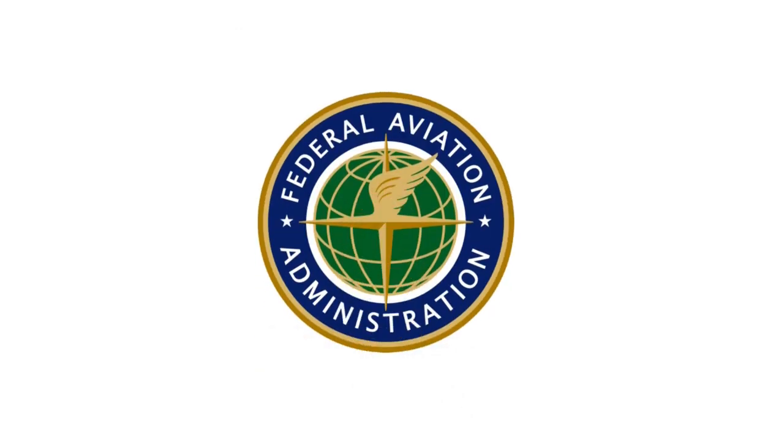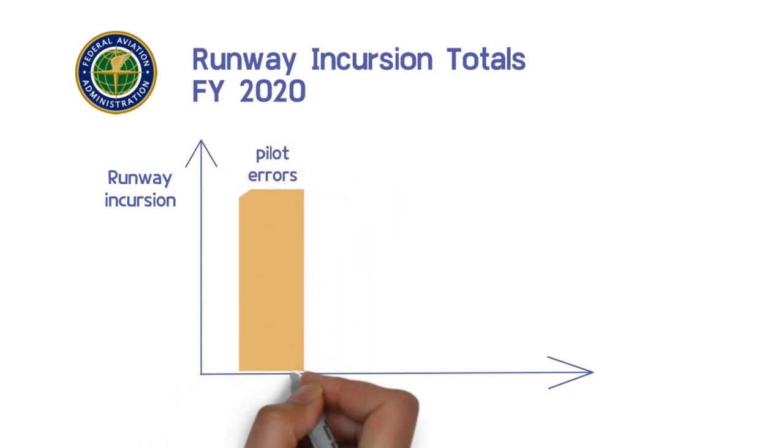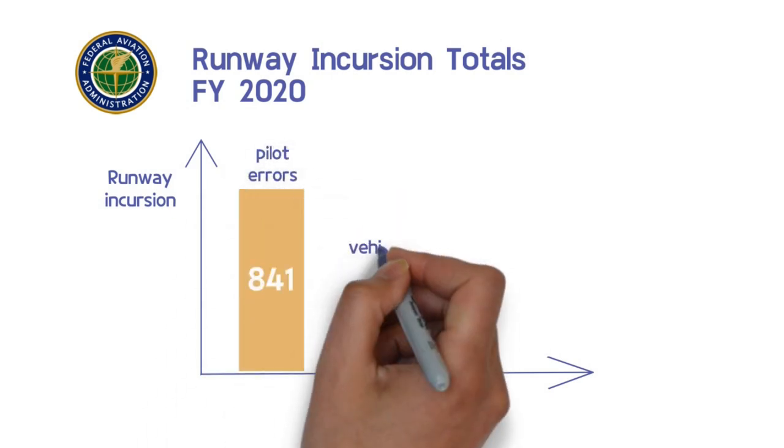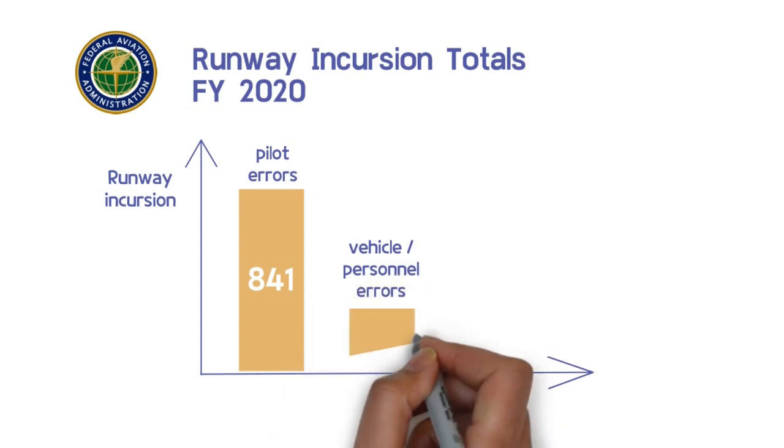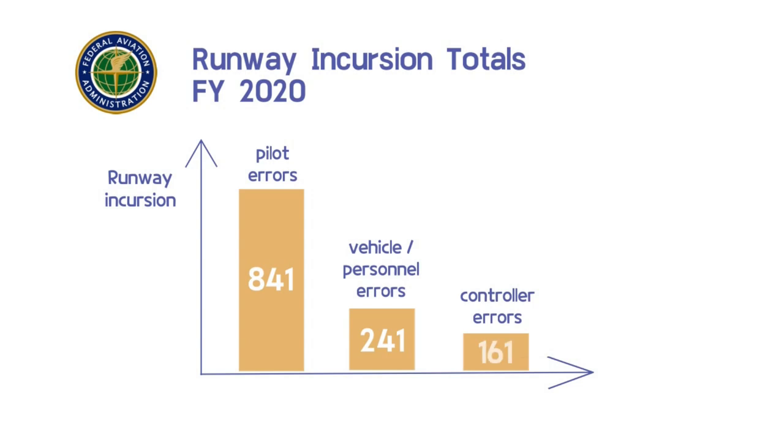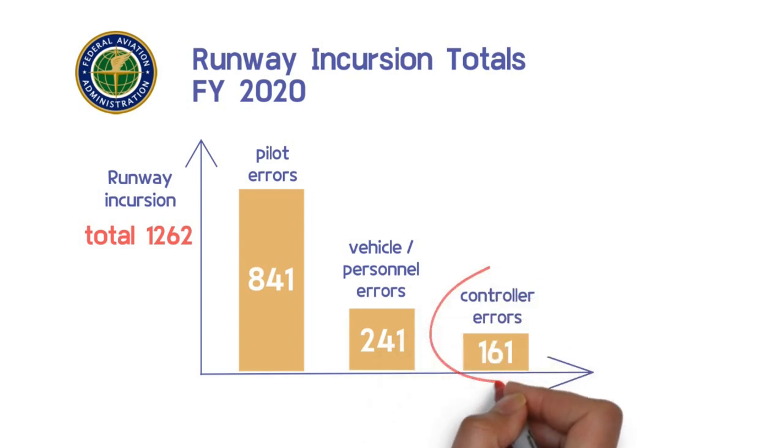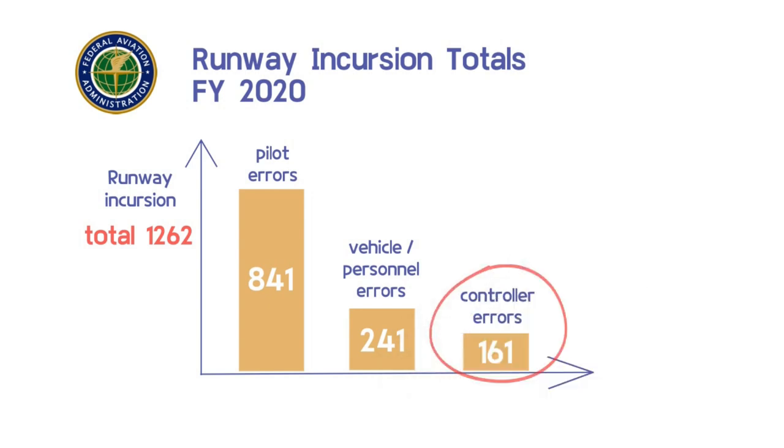However, in the FAA statistics on runway incursions that occurred in the United States in 2020, among 1,262 runway incursions, pilot errors were the most at 841, followed by vehicle and personnel errors with 241 and controller errors with 161. These statistics show that runway incursion is occurring frequently and that the controller can also be at the center of runway incursion accidents.